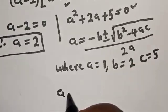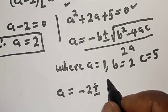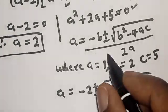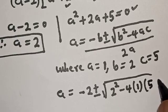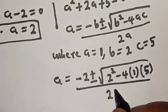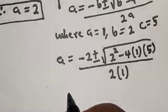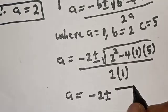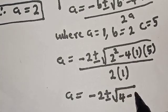Substituting into the formula, we have a equals negative 2 plus or minus square root of 2 squared minus 4 times 1 times 5, which gives a equals negative 2 plus or minus square root of 4 minus 20.